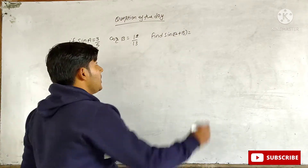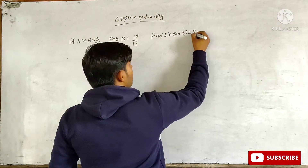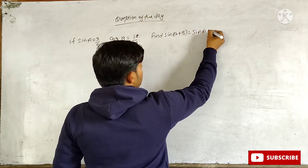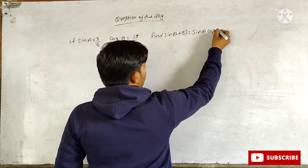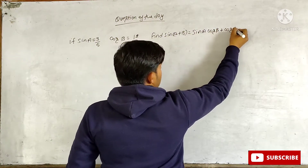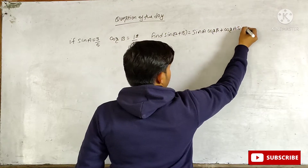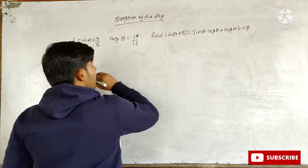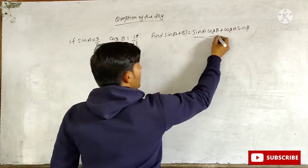We know that sin(A + B) equals sin A cos B plus cos A sin B. We have the values of sin A and cos B.